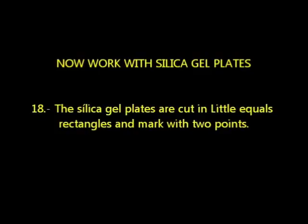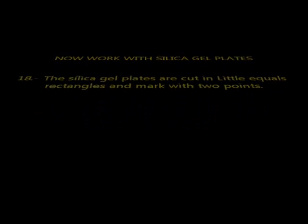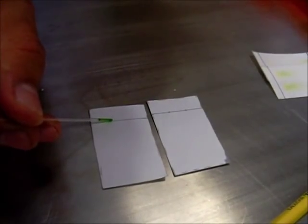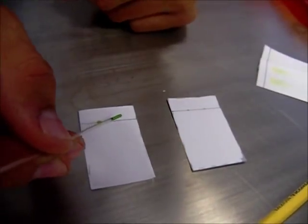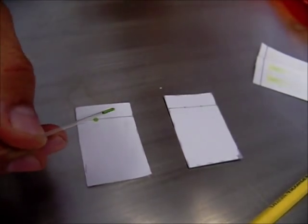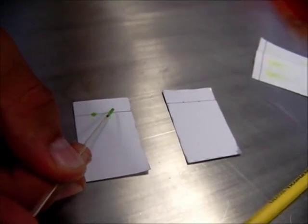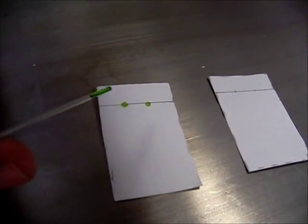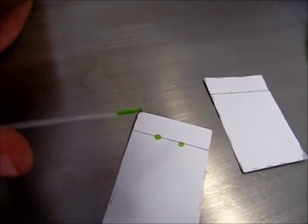The silica gel plates are cut in little equal rectangles and marked with two points. Follow the same process as the rectangles of filter paper.